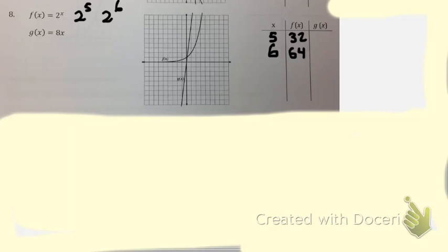Okay, now let's try g of x. So g of x, we're going to put 5 in for x, so what's 8 times 5? 40.